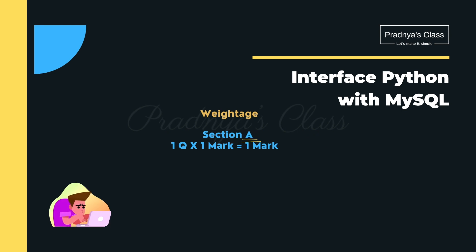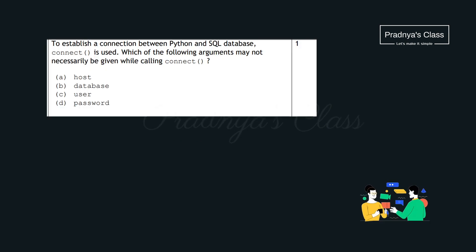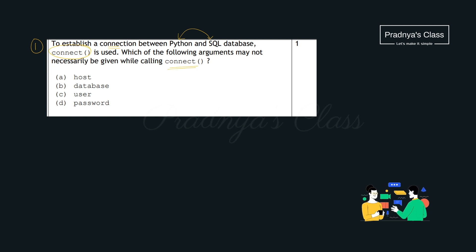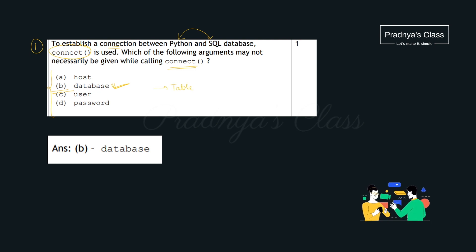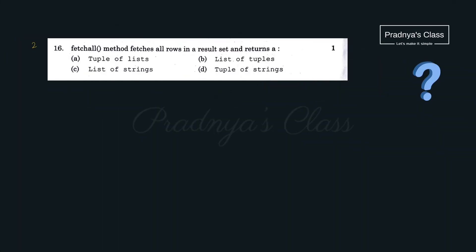Beginning the session with Section A, where you will be getting one question for one mark. The first question asks: when we create a connection using the connect function in Python and MySQL, which parameter in the connect function is optional? The correct option is B — the database parameter. If we are not working on a specific table, the database parameter is optional.